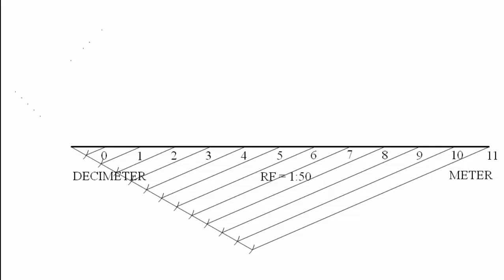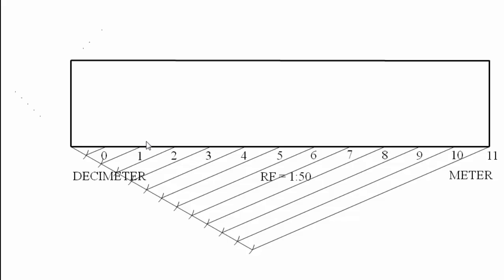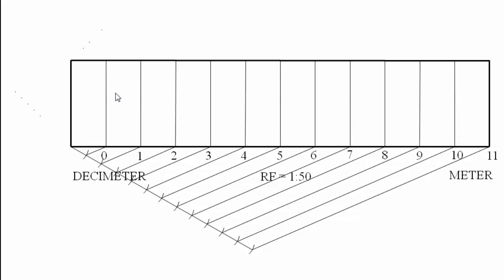Let's give this diagonal scale some height — by default we're going to take this as 5 centimeters. Now from the division points, we're going to raise vertical lines from these points.